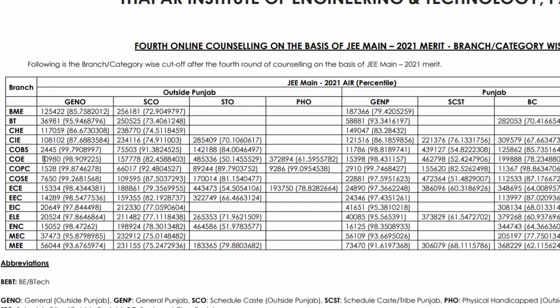For the Computer Science and Business Systems (CSBS) branch, the cutoff is 2445 rank for general outside Punjab, which is quite high — the percentile is 99.79, extremely high. For general Punjab it's 98.81 percentile or around 11,000 rank. There is a massive difference between general outside Punjab and general Punjab, which is the same pattern we normally see with board marks as well.